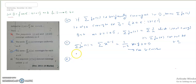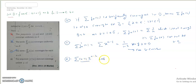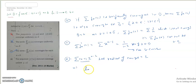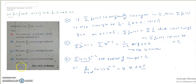Option D: the sequence fn''(z) — the second derivative — does not converge. We differentiate twice: fn''(z) = (n−1) z^(n−2) / n. Taking the limit as n tends to infinity, this goes to 0 for all z belonging to D. Since it does converge to 0, option D — which claims it does not converge — is false.